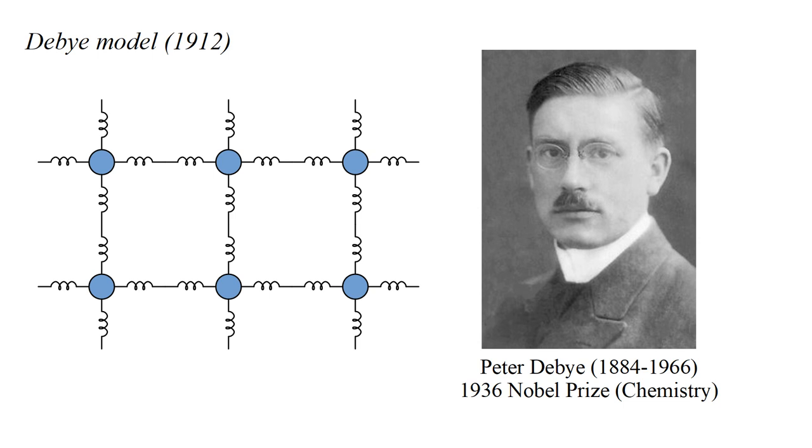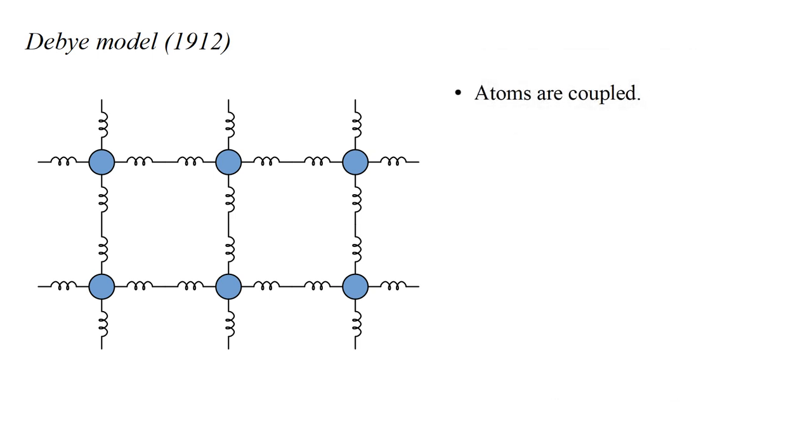We start, as in the Einstein model, with a solid treated as a collection of balls connected by springs. But we do not make the simplifying mean field assumption. Instead, we accept that the atoms are coupled, with the force on each dependent on the motion of its neighbors.